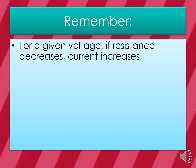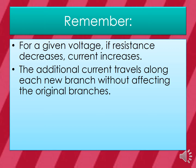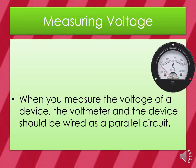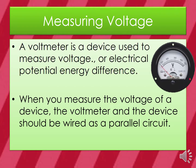Remember, for a given voltage, if resistance decreases, the current will increase. The additional current travels along each new branch without affecting the original branches. If you add branches to a parallel circuit, the brightness of the light bulbs does not change. When measuring voltage, the voltmeter and the device should be wired as a parallel circuit. A voltmeter is a device used to measure voltage.